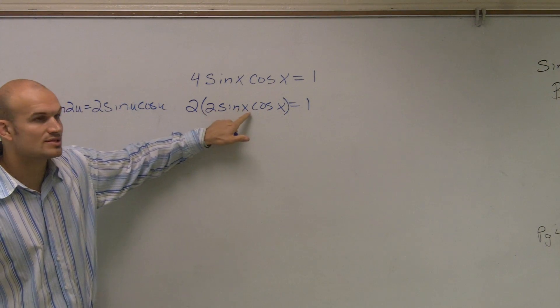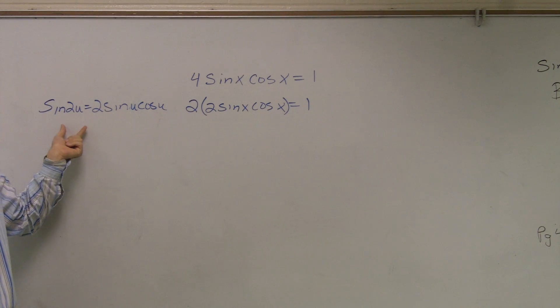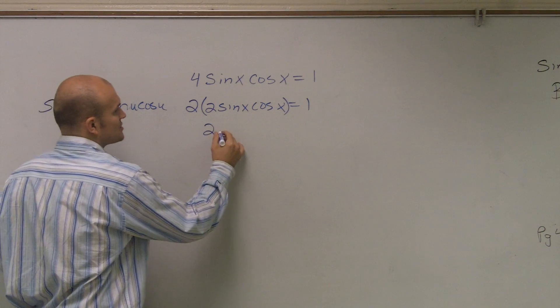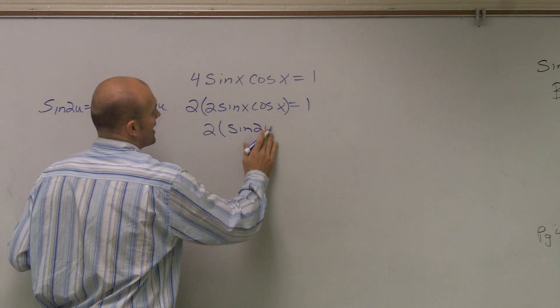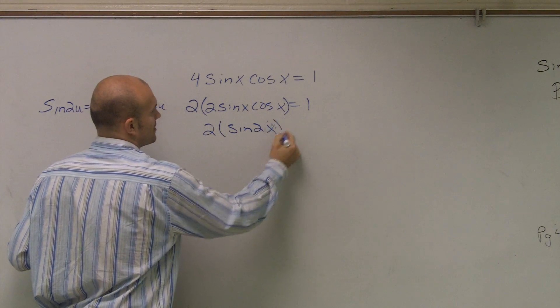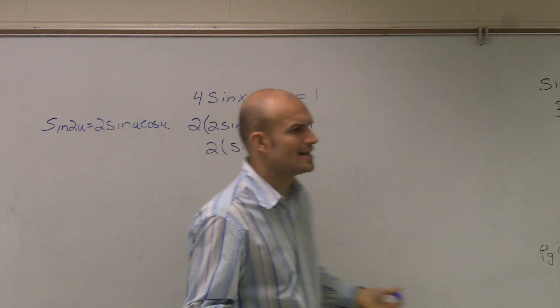Right? Well, now, what does 2 sine of an angle times cosine of an angle? Well, that is your double angle formula. So now I can rewrite that as 2 sine of 2x. So I'm using x in this problem. Equals 1. Now, why is that important? Why is that helpful for me?